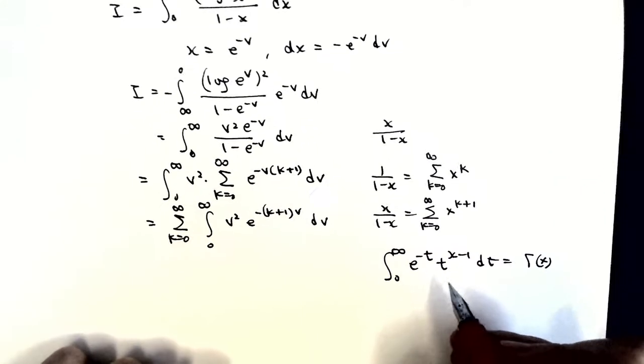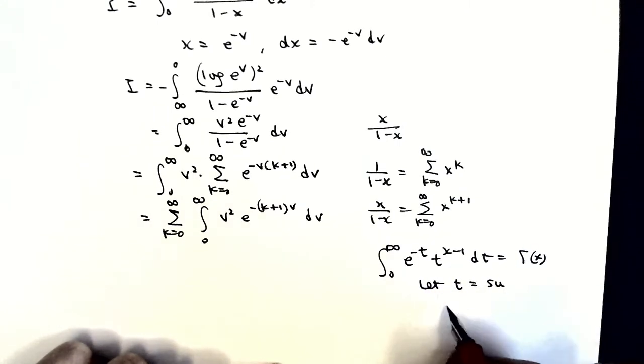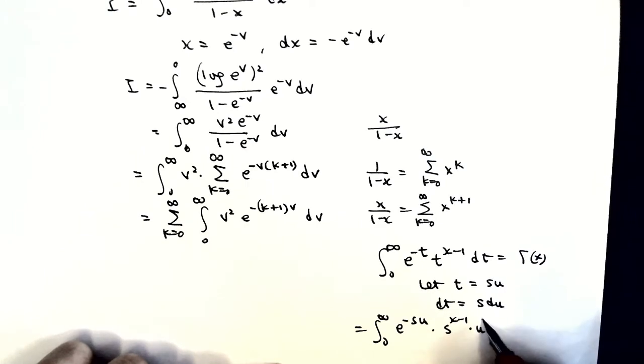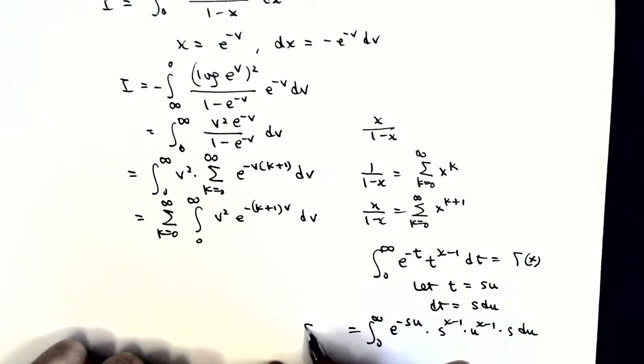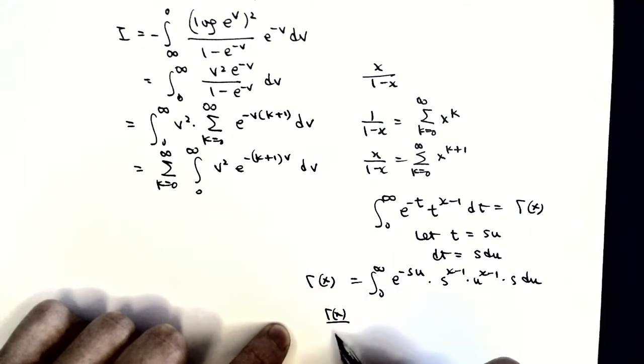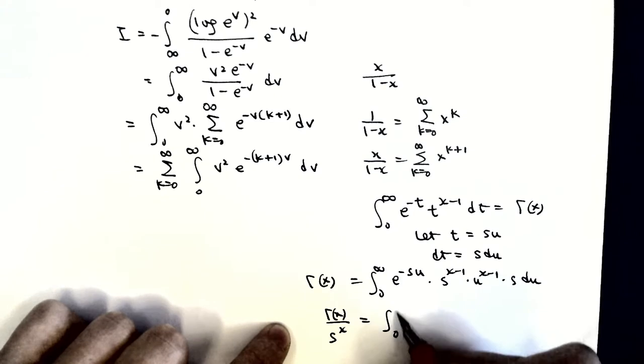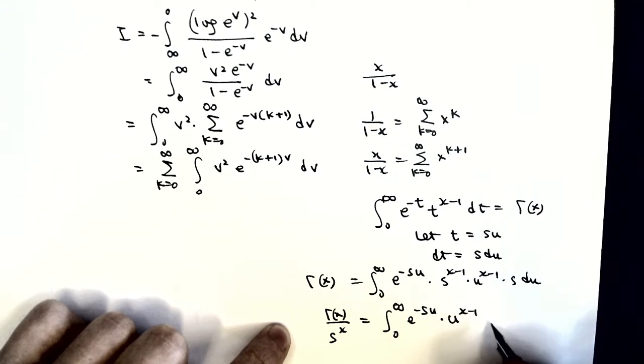And then, if we let t become s times u, dt will become s du. So in this case, what we have will be s times u to the x minus 1, e to the minus s u, s du.